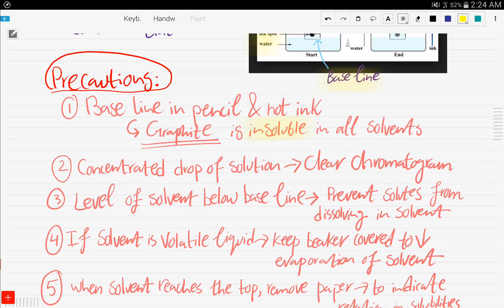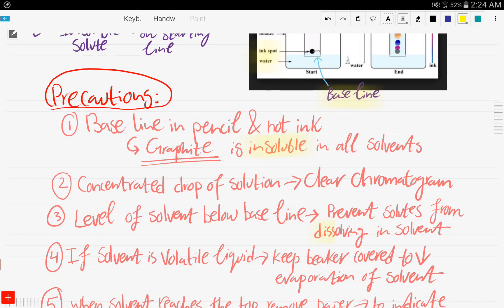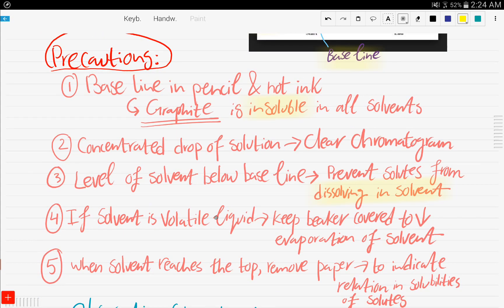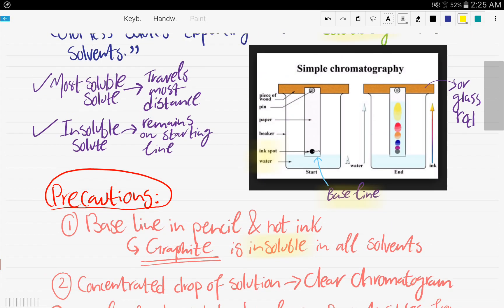Number three, the level of the solvent should be below the baseline. Why? Because it will prevent the solutes from dissolving in the solvent. You don't want to have the solvent dissolve the whole thing, and nothing travels up. Number four, if the solvent is a volatile liquid, a volatile liquid is a liquid that changes into a gas, you better keep the beaker covered just for you to reduce the evaporation of the solvent.